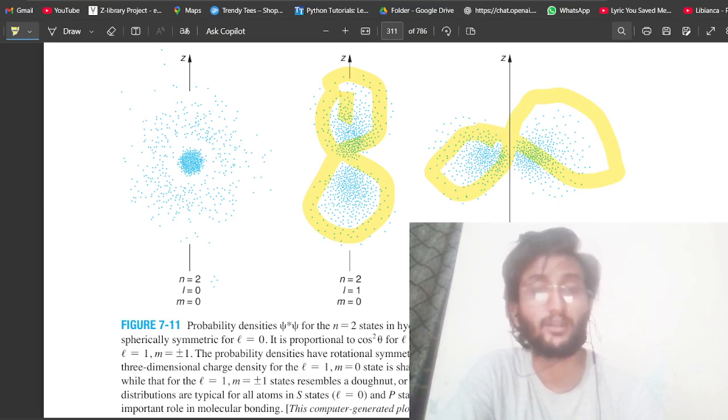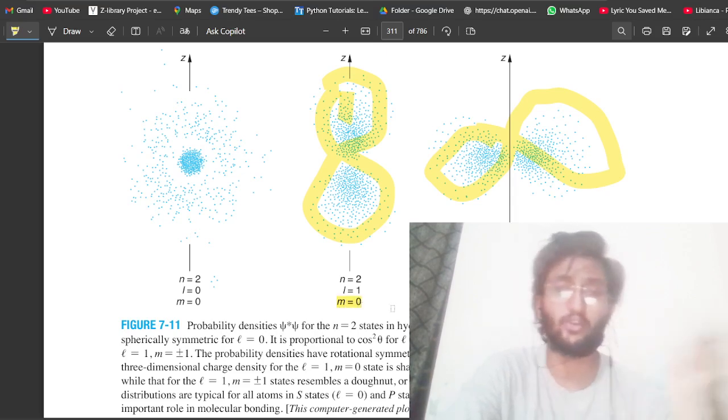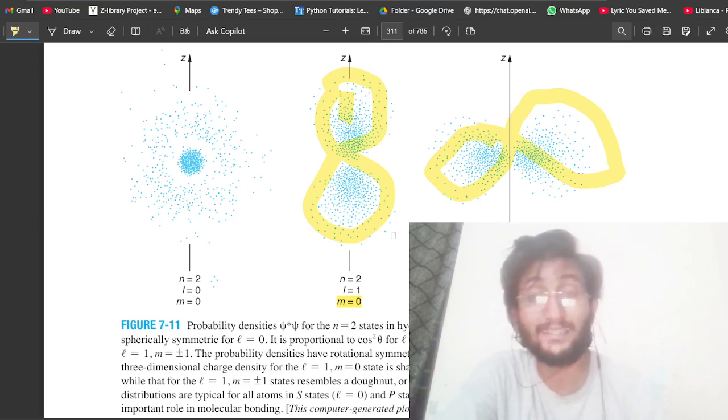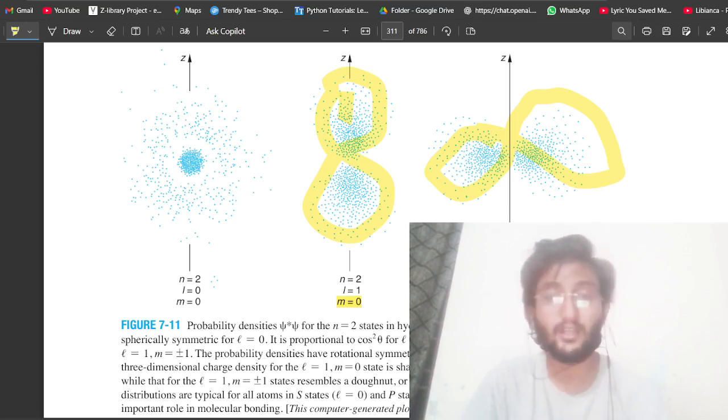These are the orbitals, this is p orbital. In every n there is orbital. In n2 there is p orbital, s orbital, and p orbital exists like this dumbbell shape. This is about Px, Py, Pz orbitals. So it will not be a classical model to define 3D, not like that.